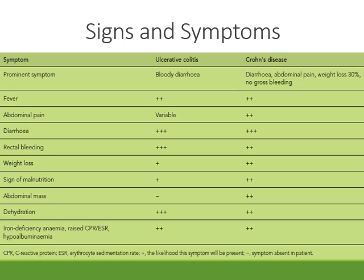There is no change in abdominal mass in ulcerative colitis, while in Crohn's disease there are chances of changes in abdominal mass. Dehydration is more prominent in ulcerative colitis compared to Crohn's disease. Iron deficiency anemia, raised C-reactive protein, erythrocyte sedimentation rate, and hypoalbuminemia are of the same intensity in both ulcerative colitis and Crohn's disease.